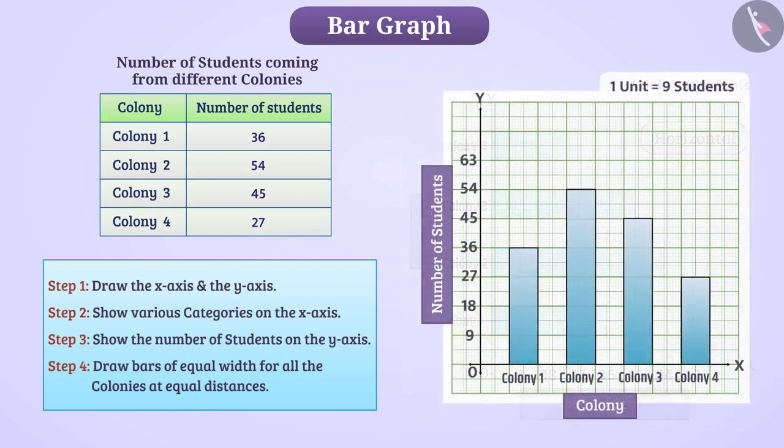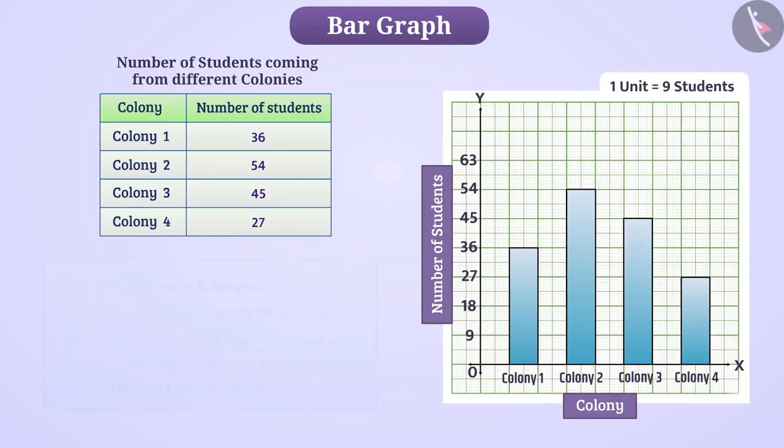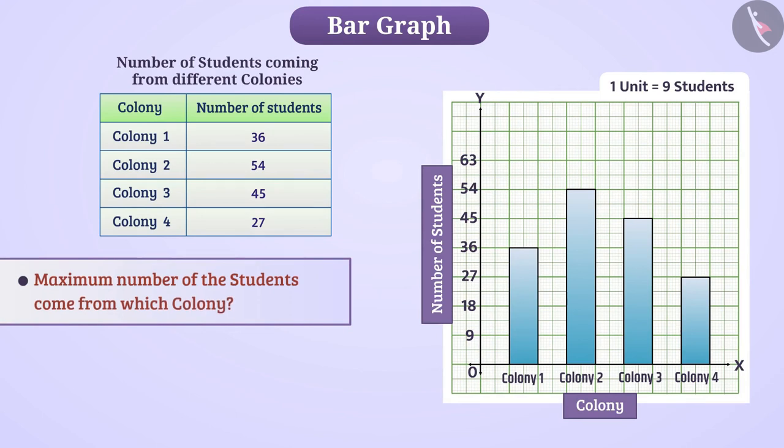Now, observe the bar graph. Can you tell me maximum number of students come from which colony? Just by looking at the graph, you will be able to tell that maximum number of students come from colony 2. In this way, the bar graph helps us to get the information by looking and comparing data.